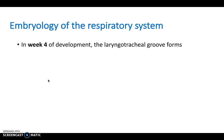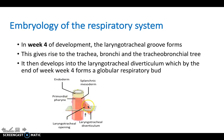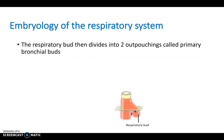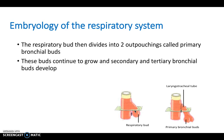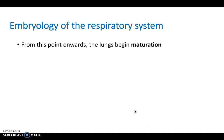In week four of development, the laryngotracheal groove forms, giving rise to the trachea, bronchi, and tracheobronchial tree. By the end of week four it develops into a diverticulum and then a respiratory bud. That bud divides into two outpouchings — primary bronchial buds — which become the primary bronchi. By the end of week five the bronchial buds have enlarged and their connections to the trachea form the main bronchi. Lung maturation continues up to around age eight.